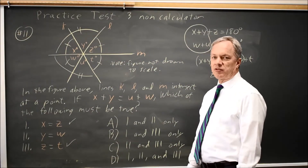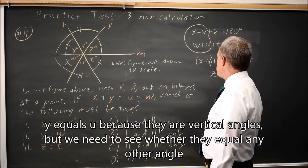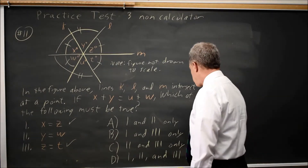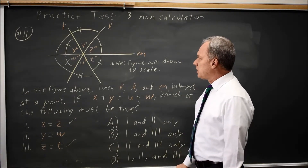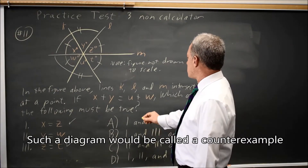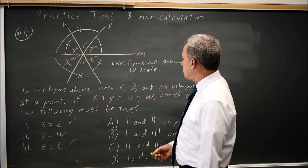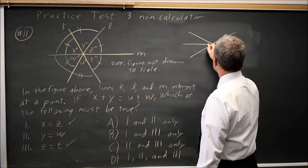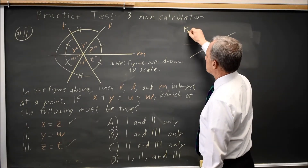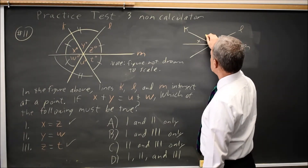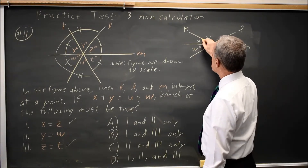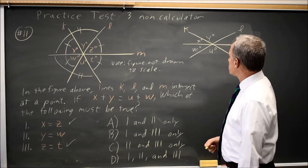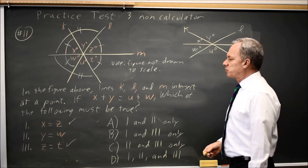The question is, does y have to equal w? I don't see anything that proves they're equal, but let's try drawing a diagram that satisfies the conditions of the question where y is not equal to w. The only requirement is that three lines meet at a point and x plus y equals u plus w. In this picture, x plus y equals u plus w, but y is not equal to w, so it is possible for statement two to be false.